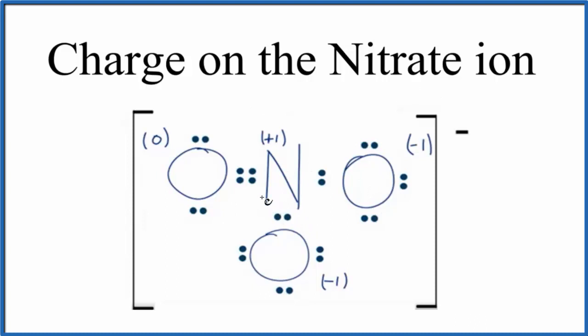You'll see that the formal charge here on the double bonded oxygen, that's 0. For the single bonded oxygen, each one of these, and here's the single bond on this oxygen and the single bond on this oxygen. Each one of those is negative 1. The nitrogen atom in the center is positive 1.